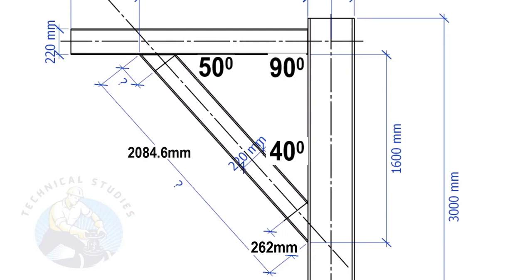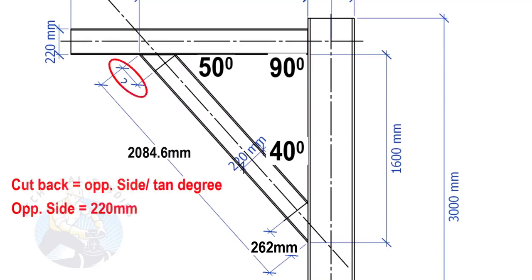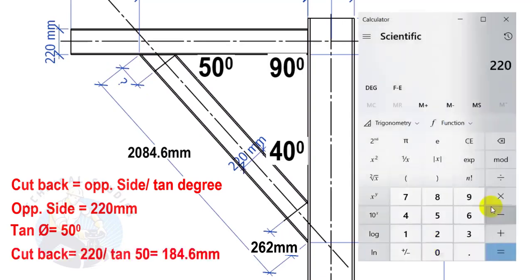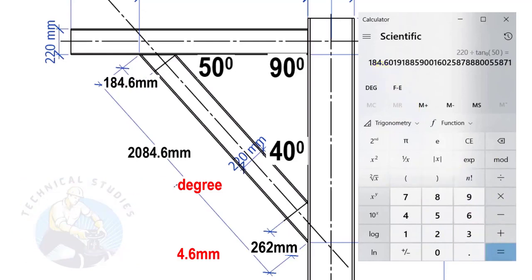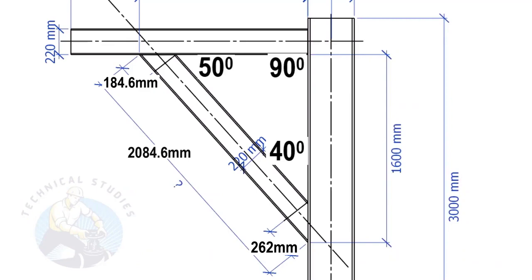Apply the same formula to calculate this cutback. Here, the opposite side is 220 millimeters and the tan degree is 50. Cutback equals 184.6 millimeters. Thank you for watching.